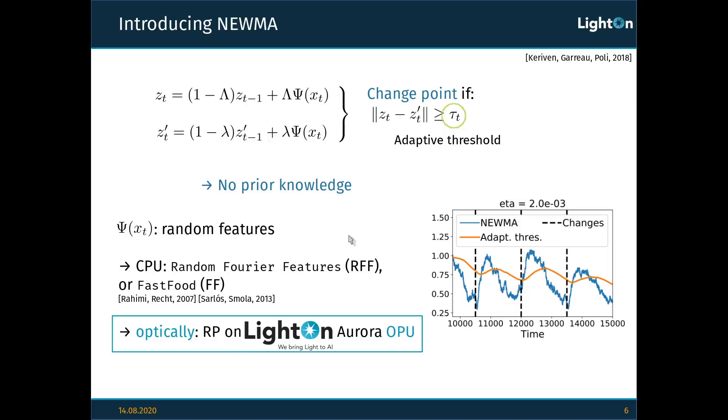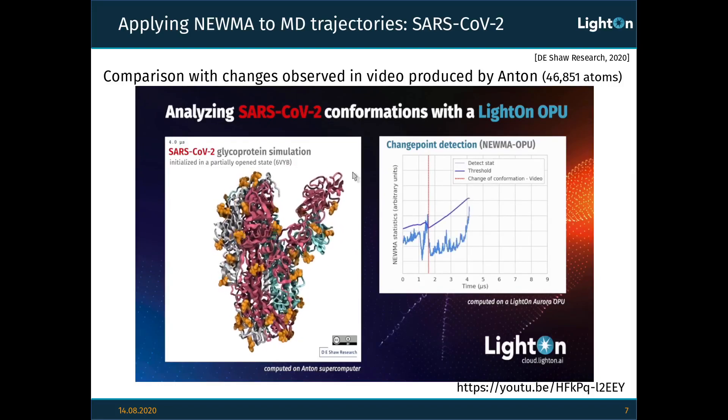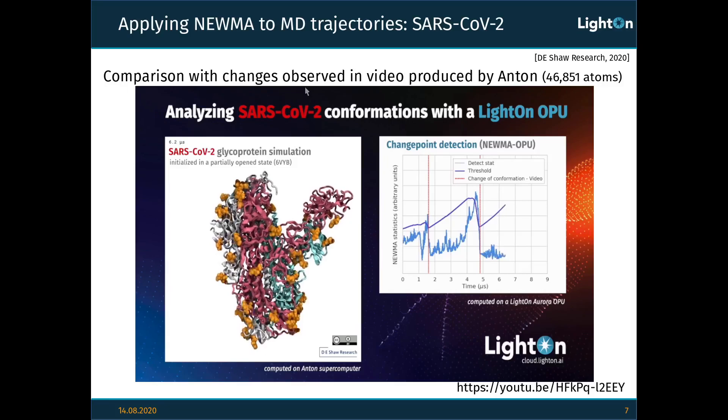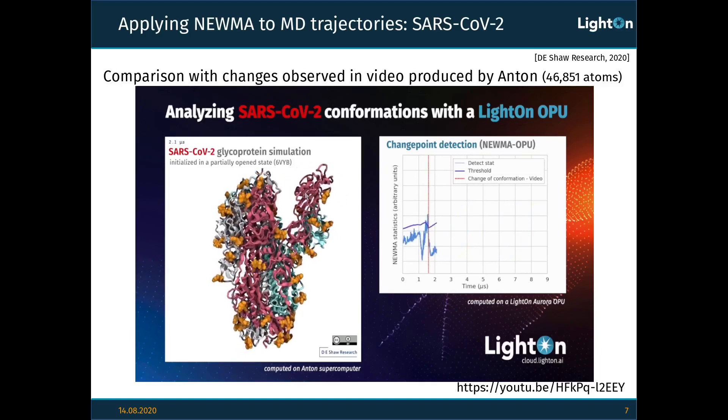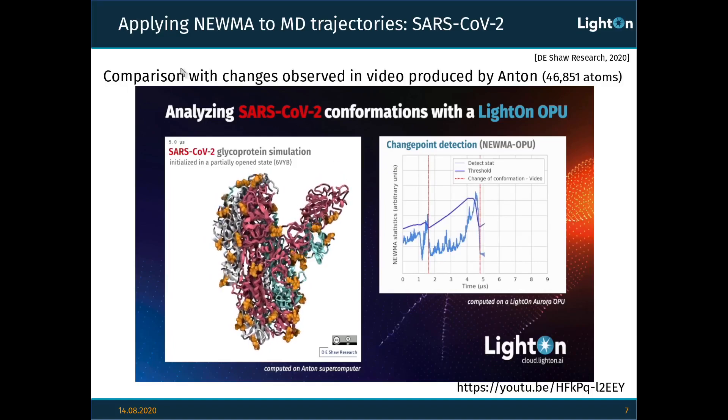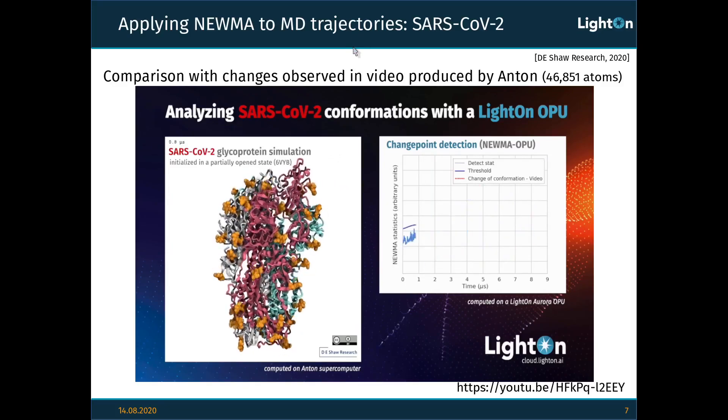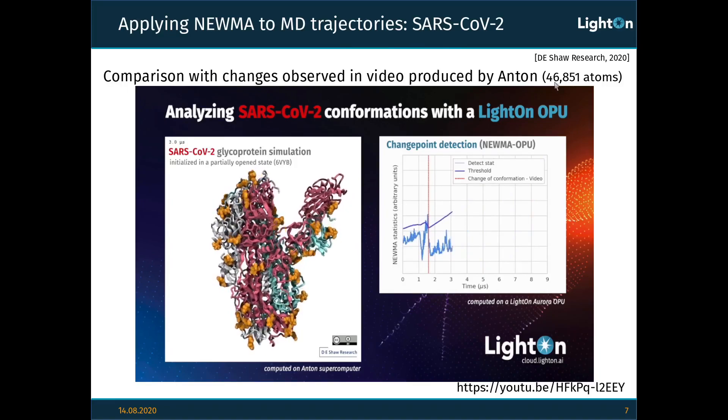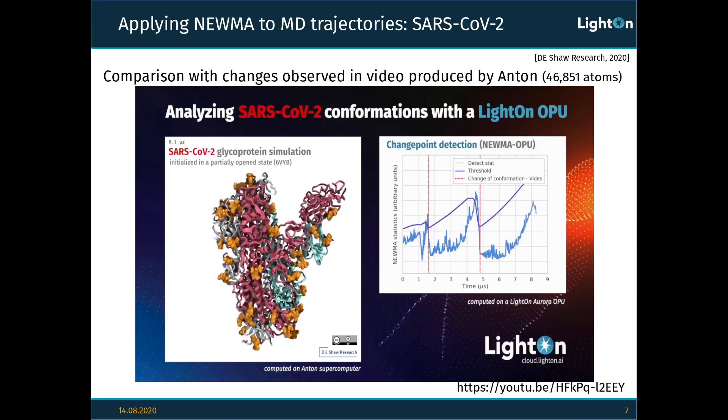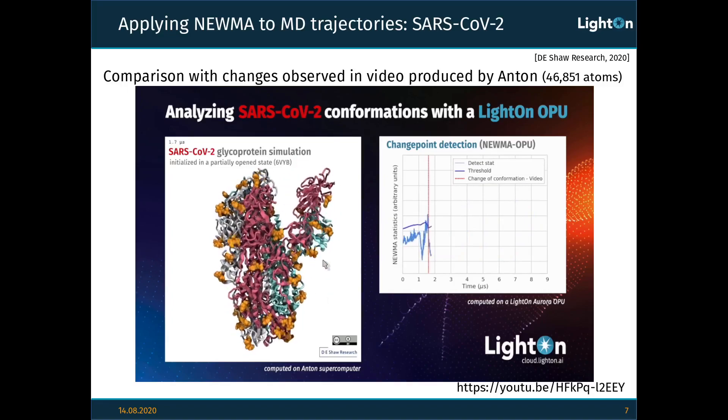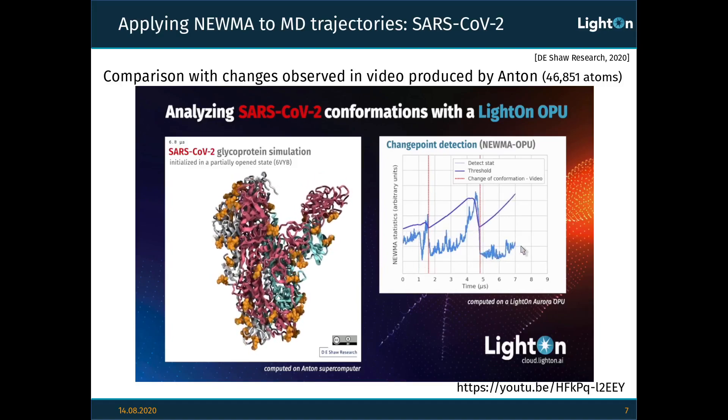So now let's see how this can be applied to molecular dynamics. The idea is that we have a trajectory of a certain molecule calculated over a certain period of time, and we calculate the Pneuma statistics in order to detect conformational changes that are big changes in a molecule that we can observe here in this video. So as an example, this trajectory has been produced by the supercomputer Anton. It is a trajectory of the SARS-CoV-2 virus which comprises a little under 47,000 atoms. You can see that in this video, we see the molecule initially bound together, we see it split, and then detach furthermore, and the statistics is well able to detect these changes.